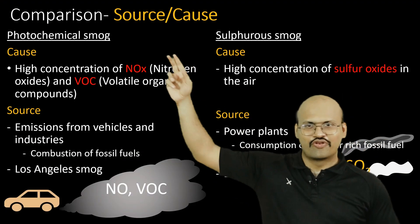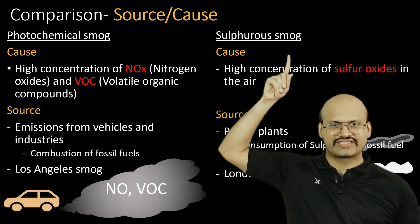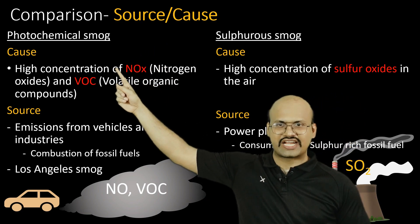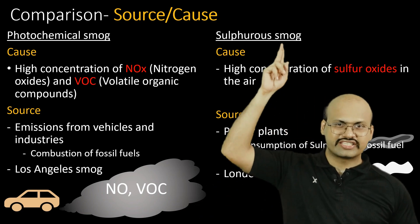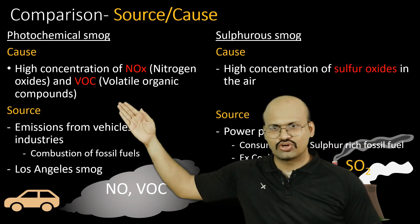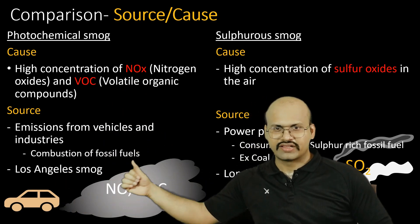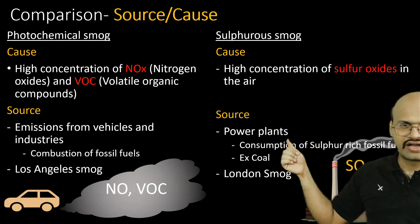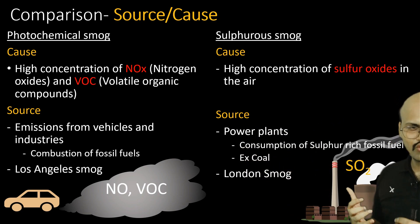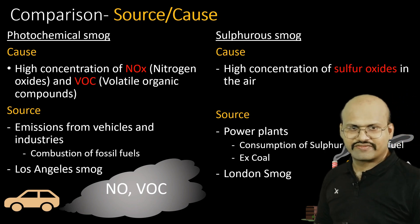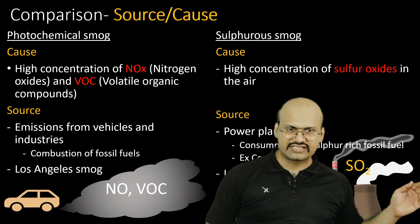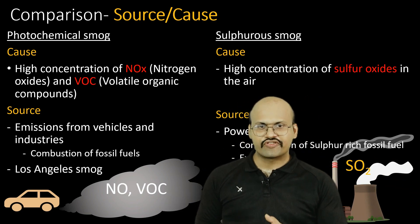The comparison between photochemical smog and normal smog, that is sulfurous smog. Photochemical smog is mainly created by nitrogen oxides and volatile organic compounds, while sulfurous smog is created by sulfur oxides. The main source of nitrogen oxides and VOCs is vehicular emission, while the main source of sulfur oxides is from power plants using fossil fuels like coal, which has a lot of sulfur in it. The smoke produced by these plants contains sulfur dioxide, which then creates sulfurous smog.